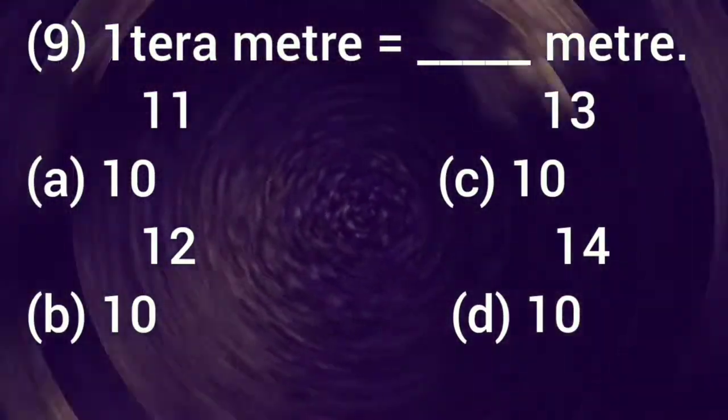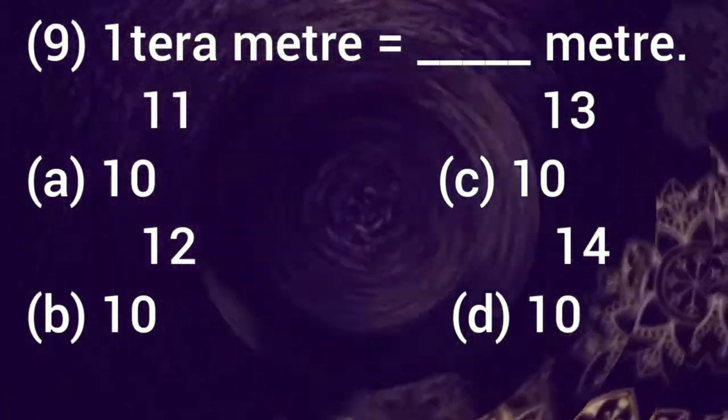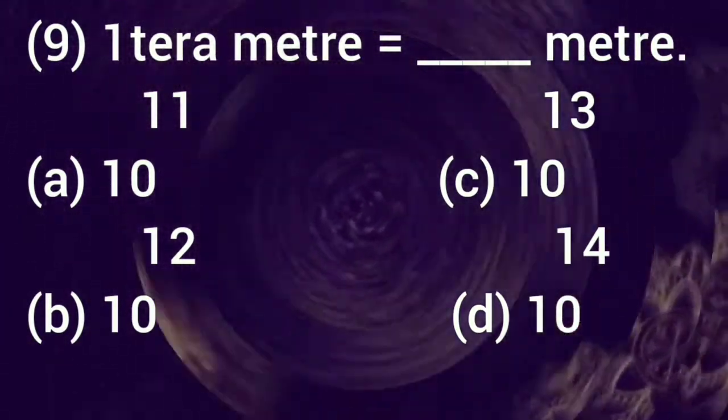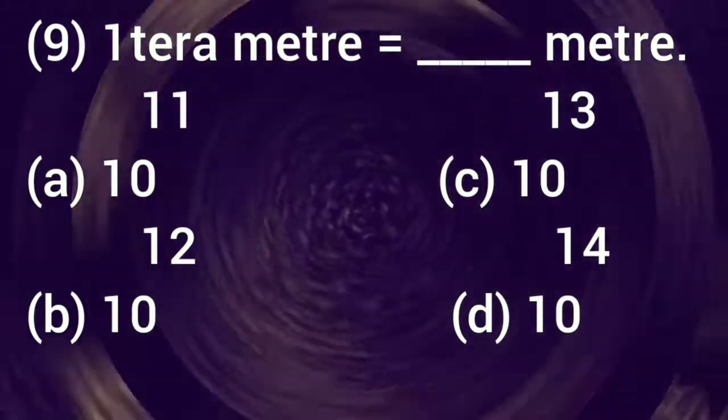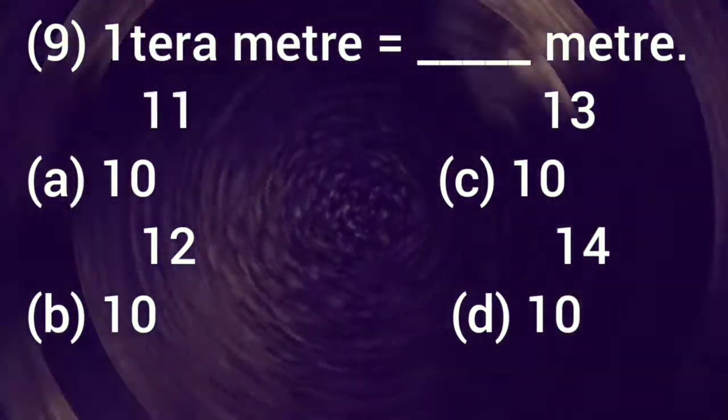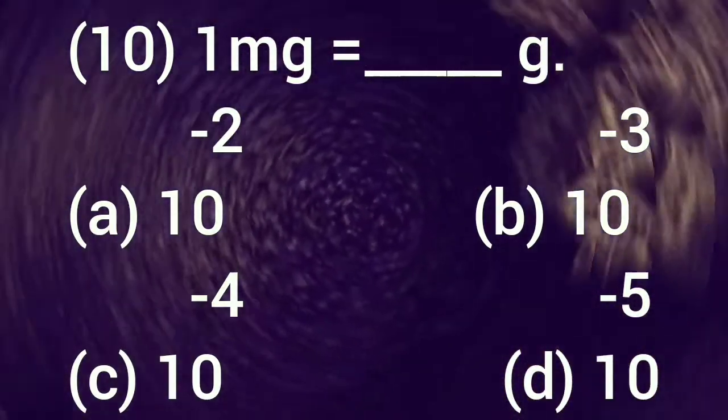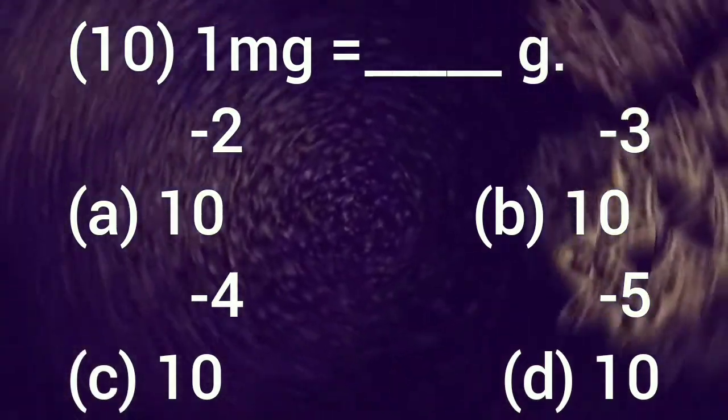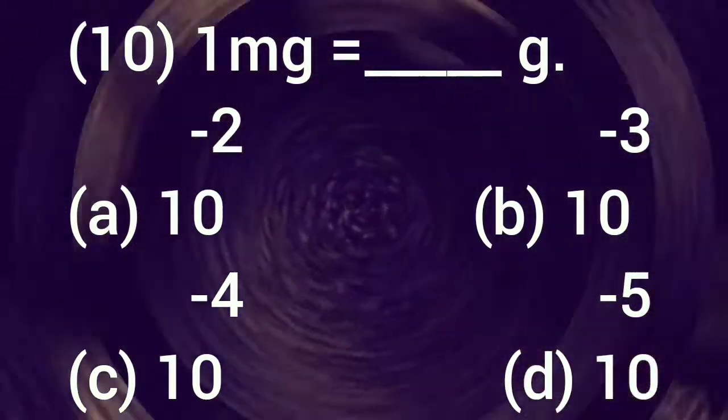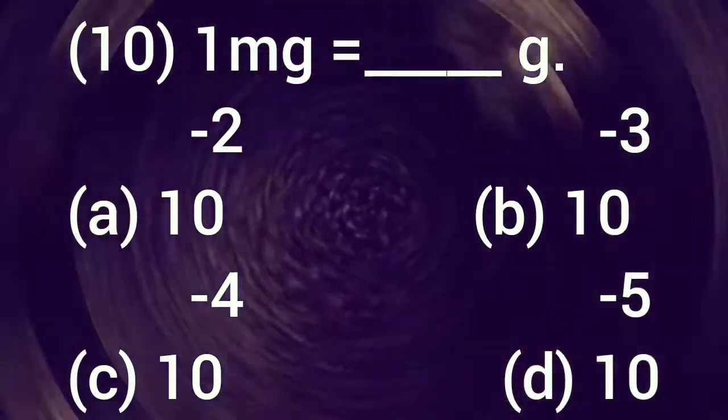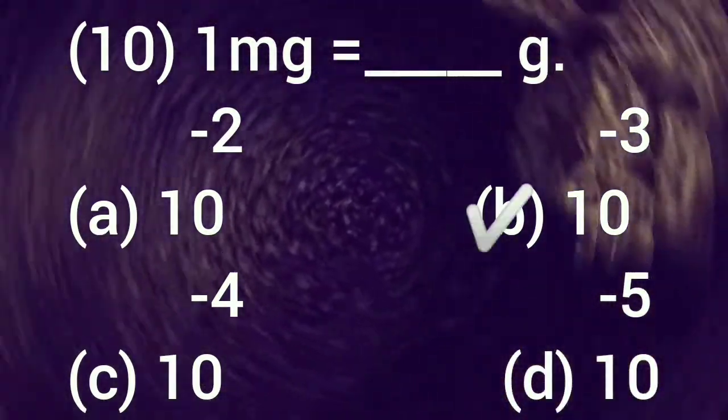Let's move on to next question number nine. One terameter is equal to dash meter. a: 10 to the power 11, b: 10 to the power 12, c: 10 to the power 13, d: 10 to the power 14. Select your answer. Correct option is b, 10 to the power 12. The correct option is b, 10 to the power minus three.